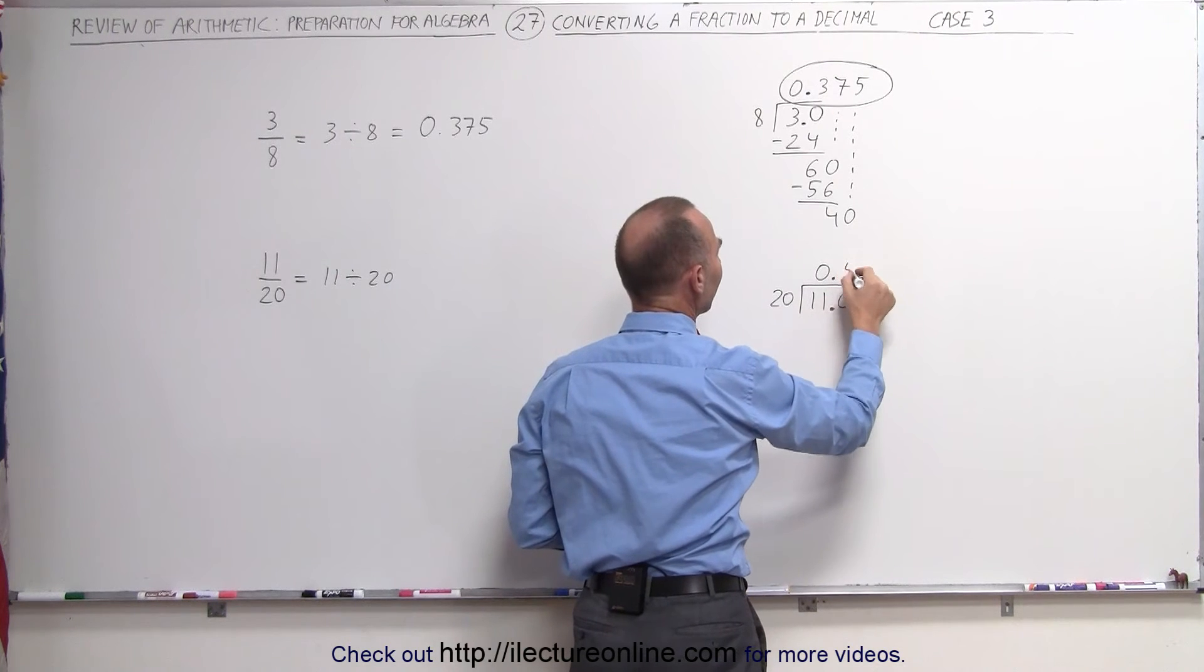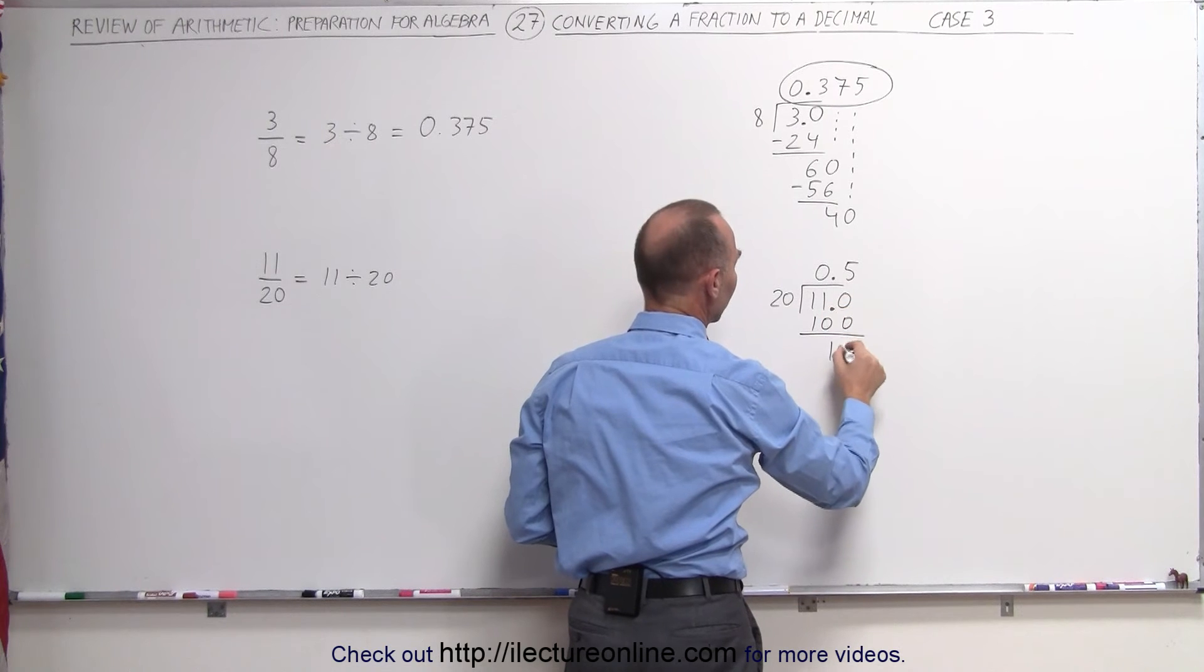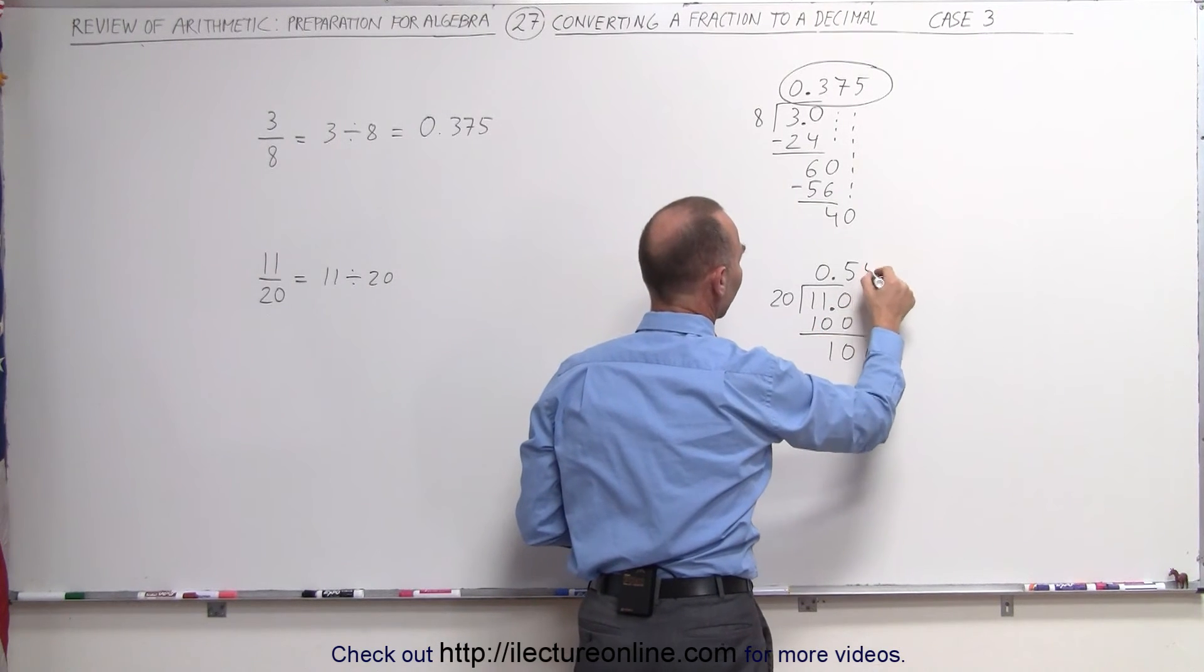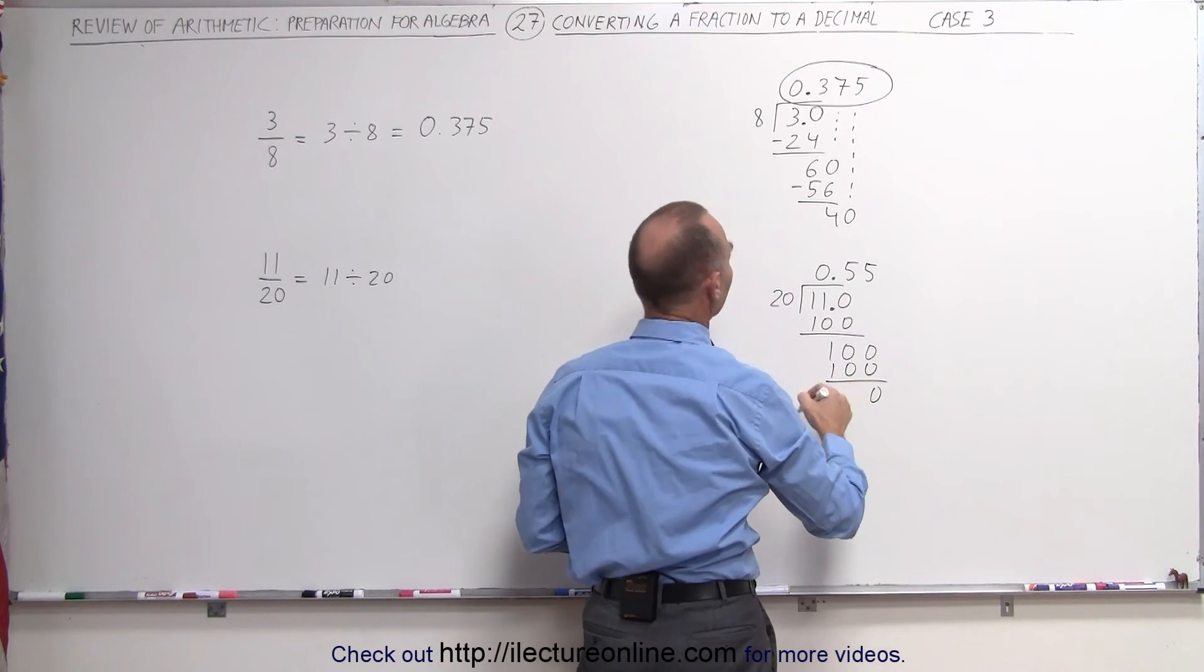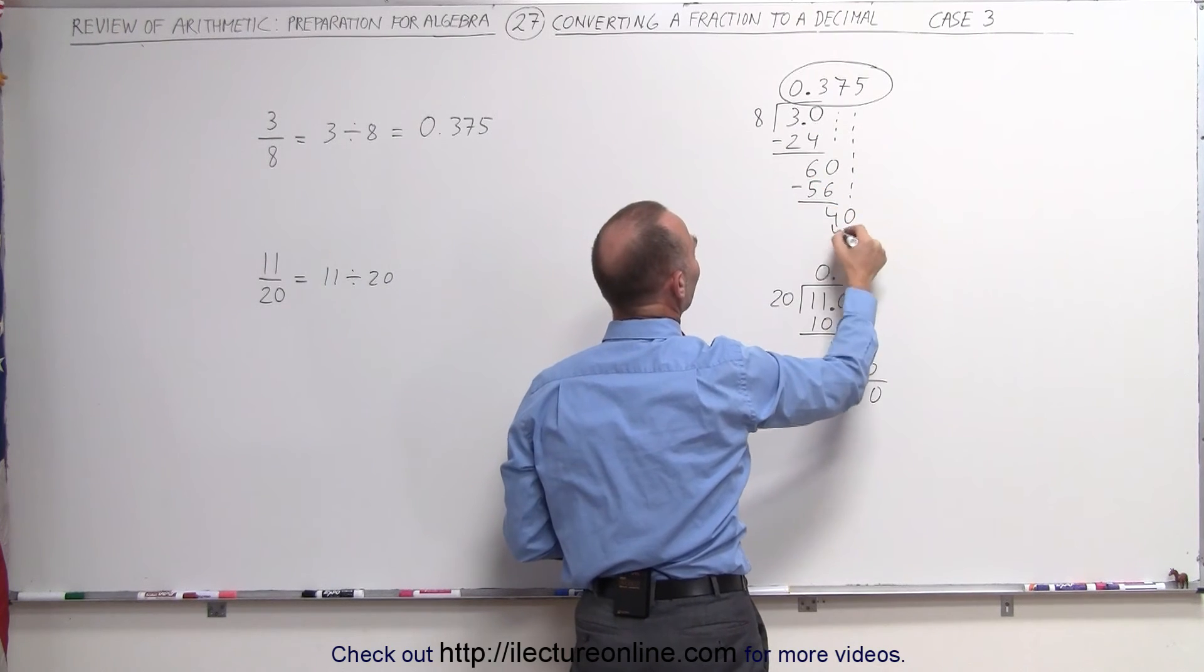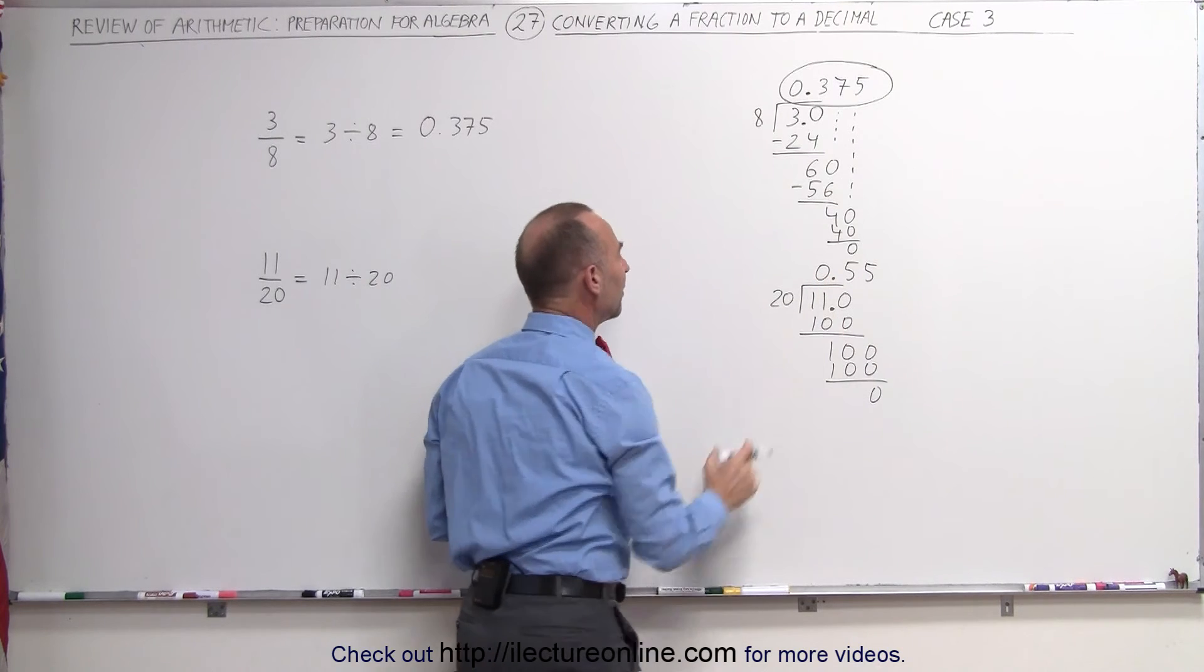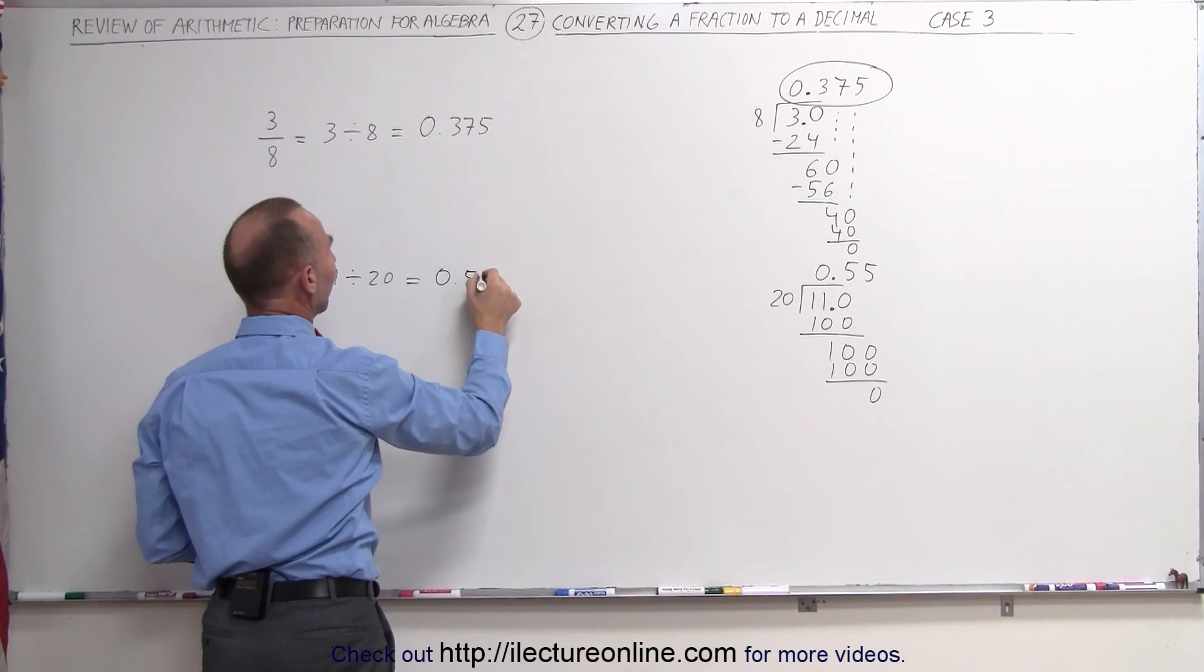20 goes into 110, 5 times. 5 times 20 is 100, the remainder is 10. Drop down another 0. 20 goes into 100, 5 times. 5 times 20 is 100, remainder 0. I guess I didn't do the final thing here, 5 times 8 is 40, remainder 0, so we are done. So that means this can be written as 0.55.